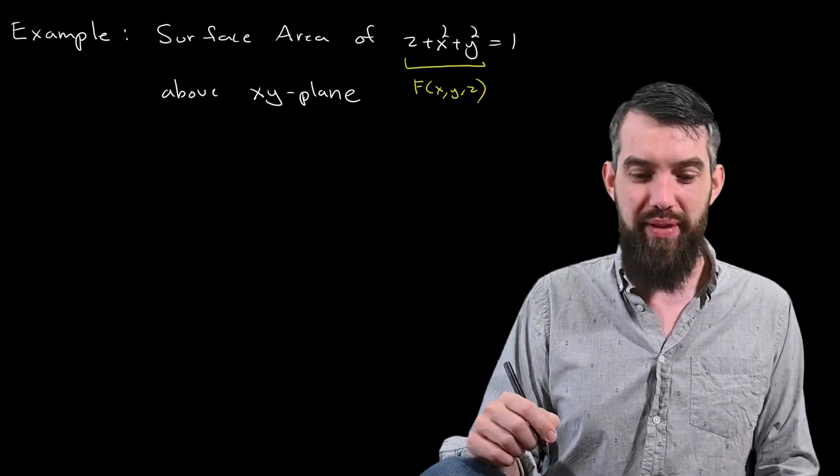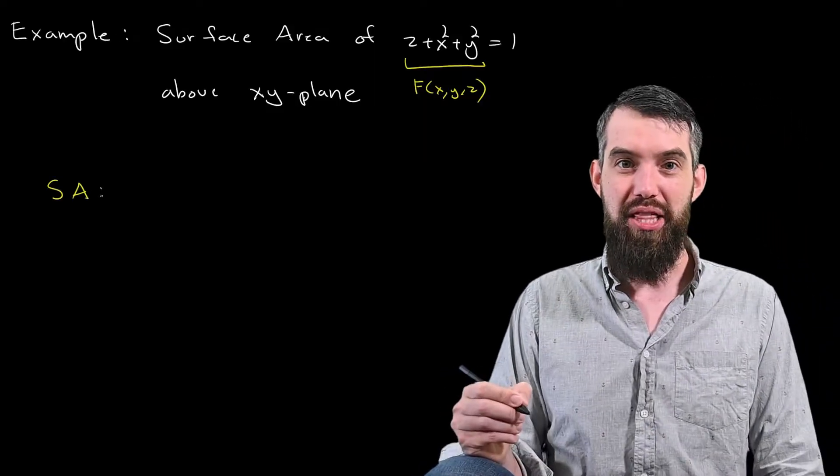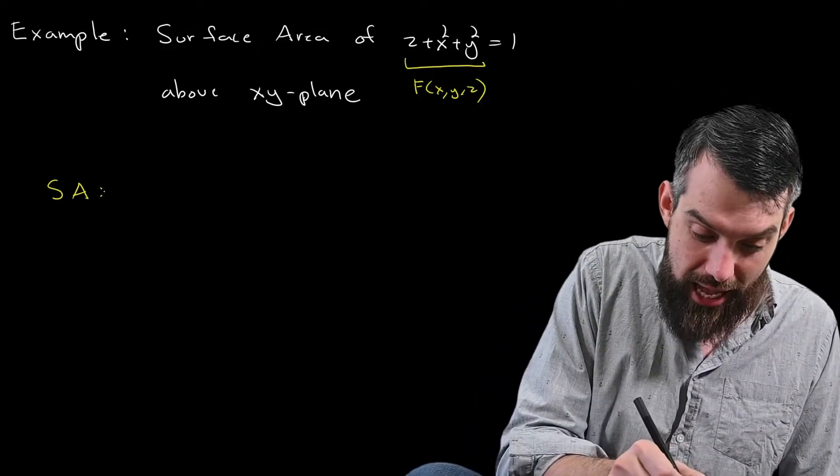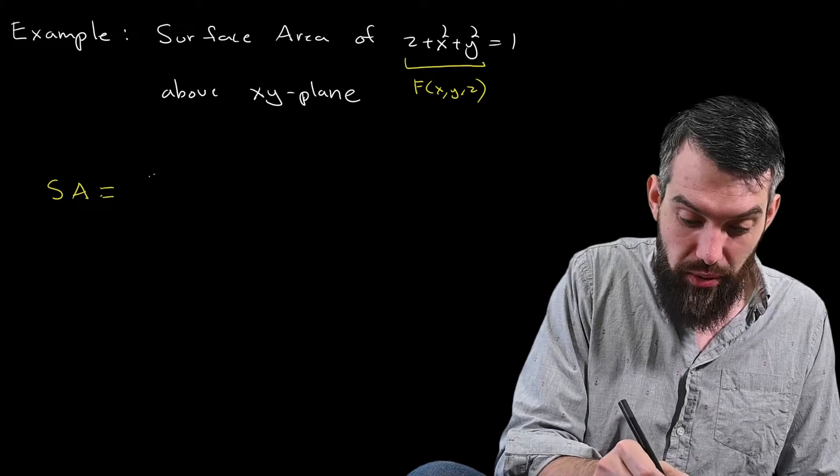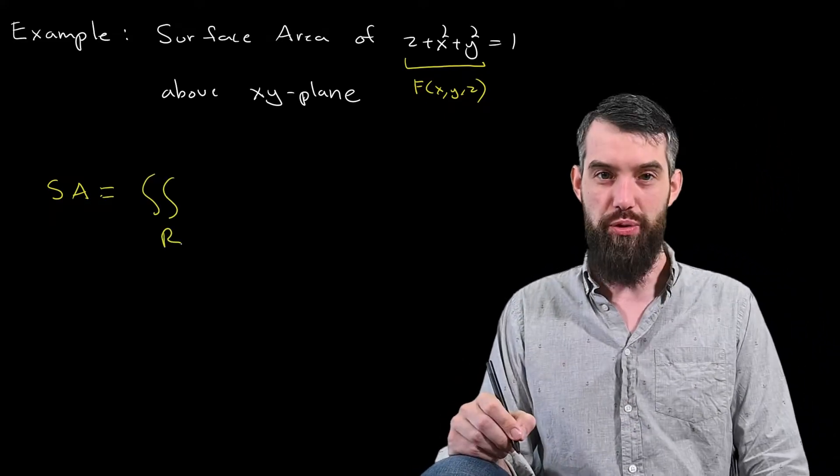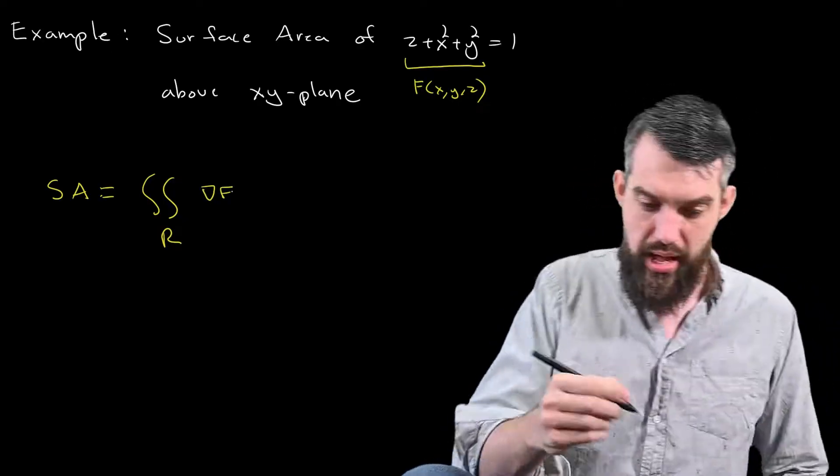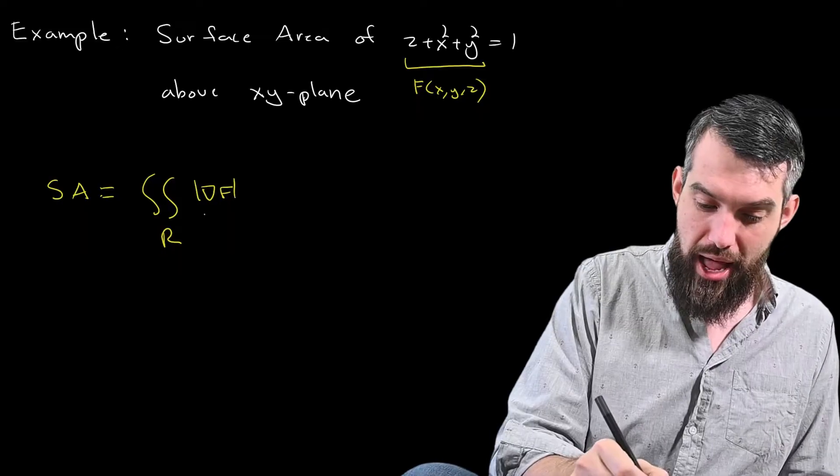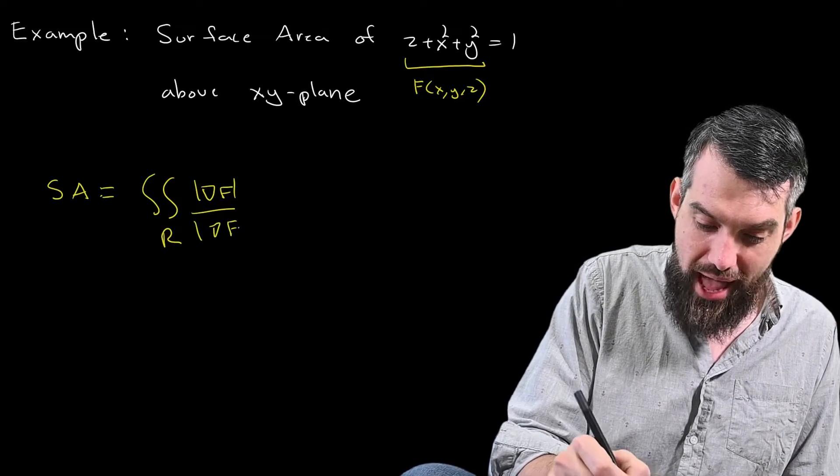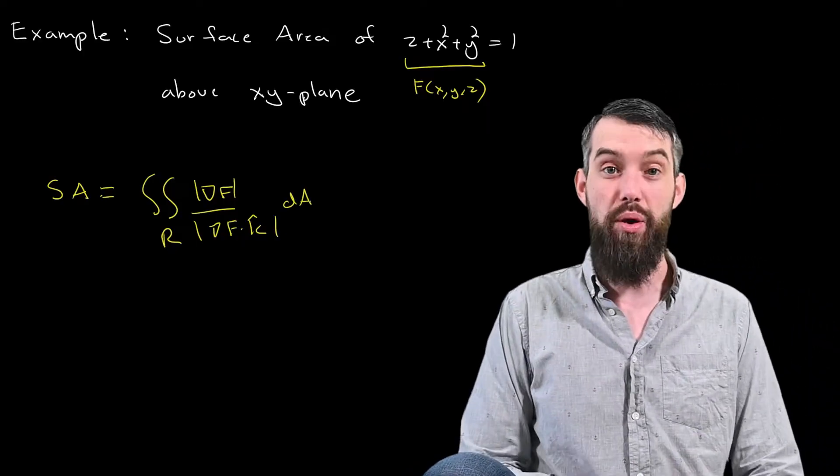What we'd seen in our previous video is that we had a formula that applied in this case. The formula worked as follows: the surface area was equal to the double integral over whatever the relevant region was of the gradient of f, its magnitude, and then divided out by the length of the gradient of f dotted with k hat, and then all integrated over whatever the area was.